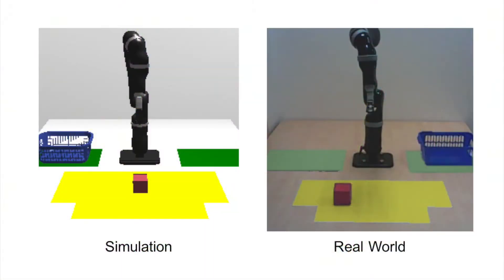In these images, we show where the cube and basket can be placed during training and testing. The yellow area represents the possible locations of the cube, and the green areas represent the possible locations of the basket.